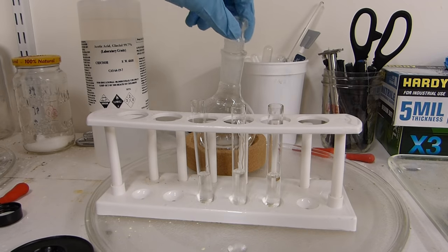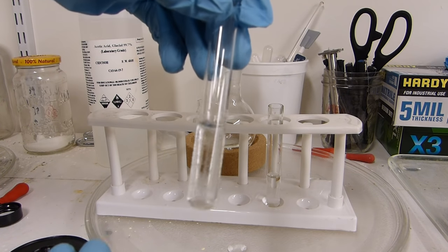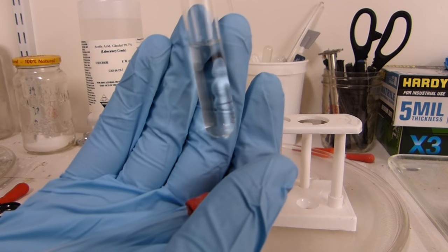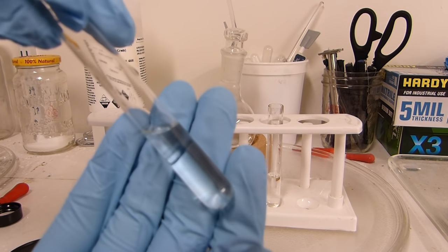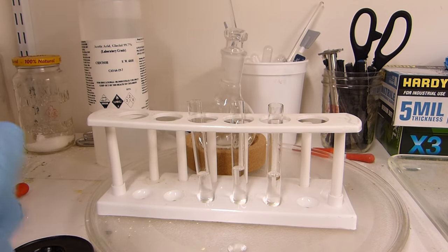There we go. And as you can see, it's shot straight to the bottom in little globs. And now there's a blob on the bottom. Showing that, that is substantially pure acetic anhydride.